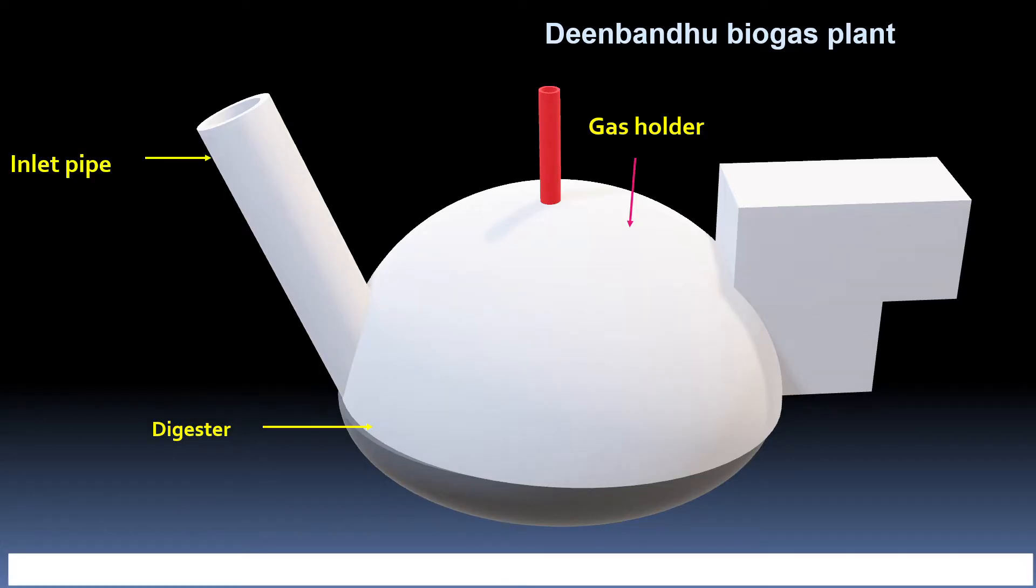You can also see outlet tank and inlet pipe in this diagram. This is a gas outlet through which we can utilize gas. The outlet opening is inside the 3D model from which slurry flows from digester to the outlet tank.